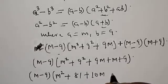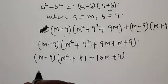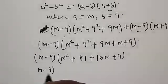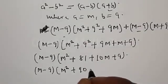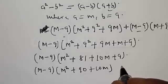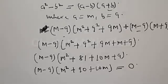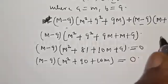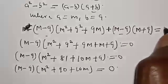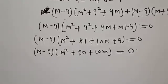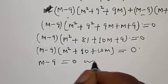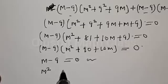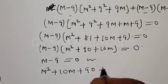Then we have (M minus 9) multiplied by (M² plus 81 plus 9M plus M plus 9), that is 10M plus 9. So we have (M minus 9) multiplied by (M² plus 81 plus 90 plus 10M), everything equal to 0.